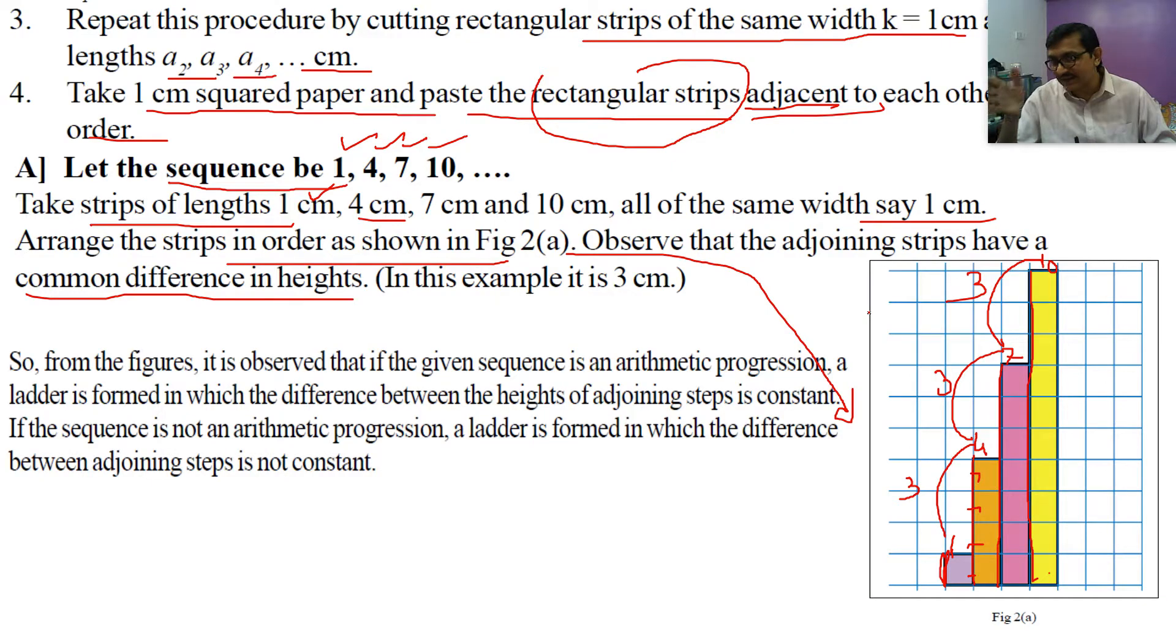From the figure it is observed that if the given sequence is an AP or arithmetic progression, a ladder is formed in which the difference between the heights of adjoining steps is constant, 3 units. If the sequence is not an arithmetic progression, the difference between adjoining steps is not constant. Students will immediately understand that 1, 4, 7, 10 is an arithmetic progression because their common difference is constant and equal.